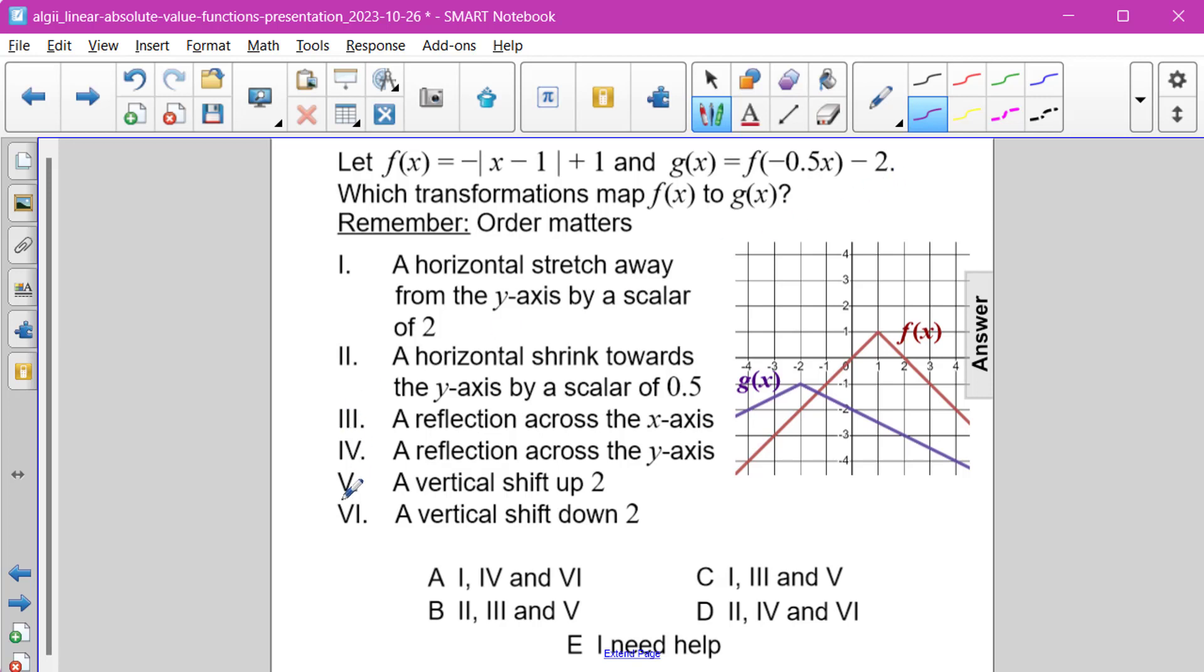So the very last step that we are going to have here is Roman numeral 6. So we can actually eliminate choices B and C right away because they end in 5, shifting up 2, and that's not happening in this case.